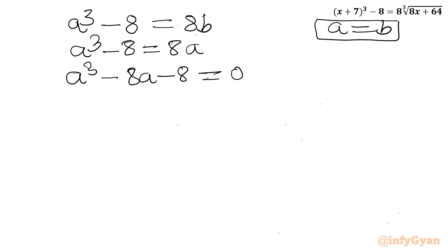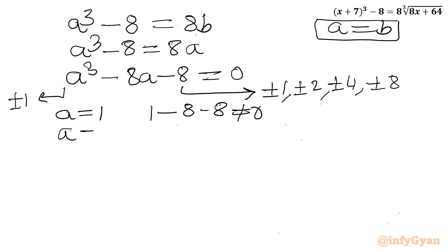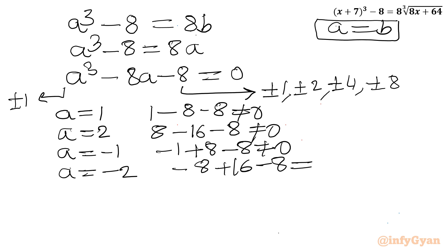Using the rational root theorem, eligible factors of 8 are ±1, ±2, ±4, ±8, divided by leading coefficient ±1. Testing a = 1: not satisfied. a = 2: 8 - 16 - 8 ≠ 0. a = -1: -1 + 8 - 8 ≠ 0. a = -2: -8 + 16 - 8 = 0. Yes! So a = -2 is a solution, meaning (a + 2) is a factor.